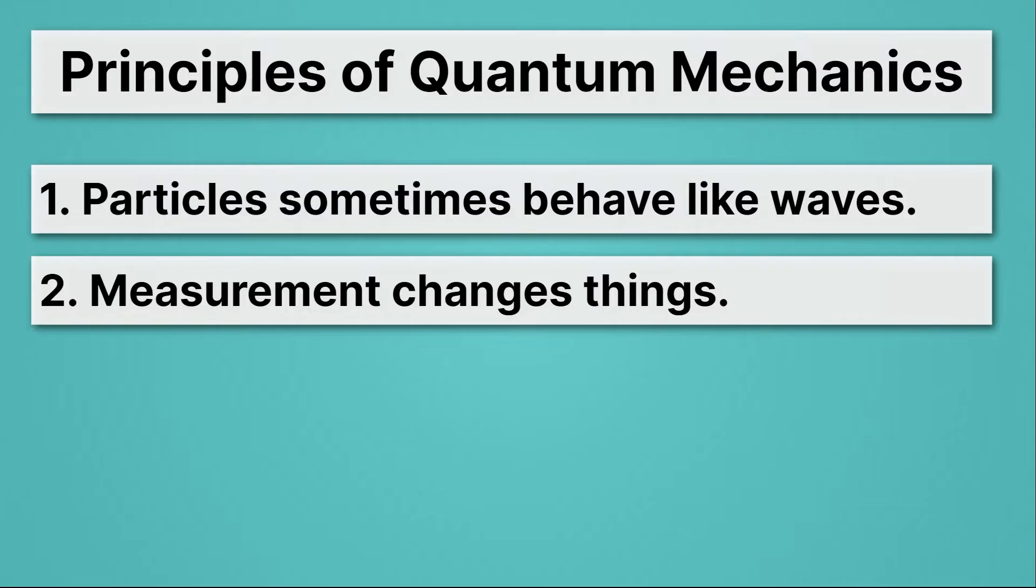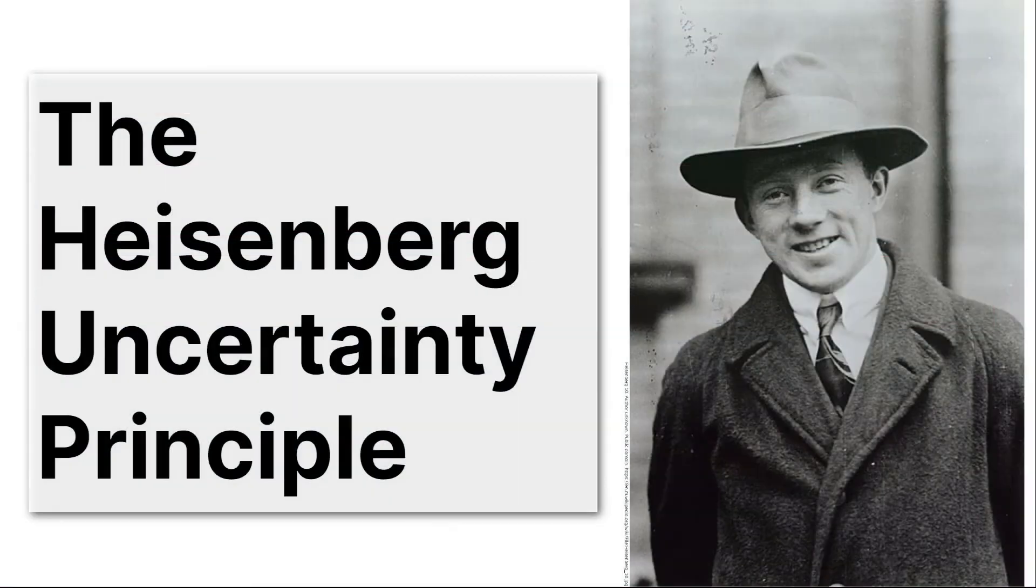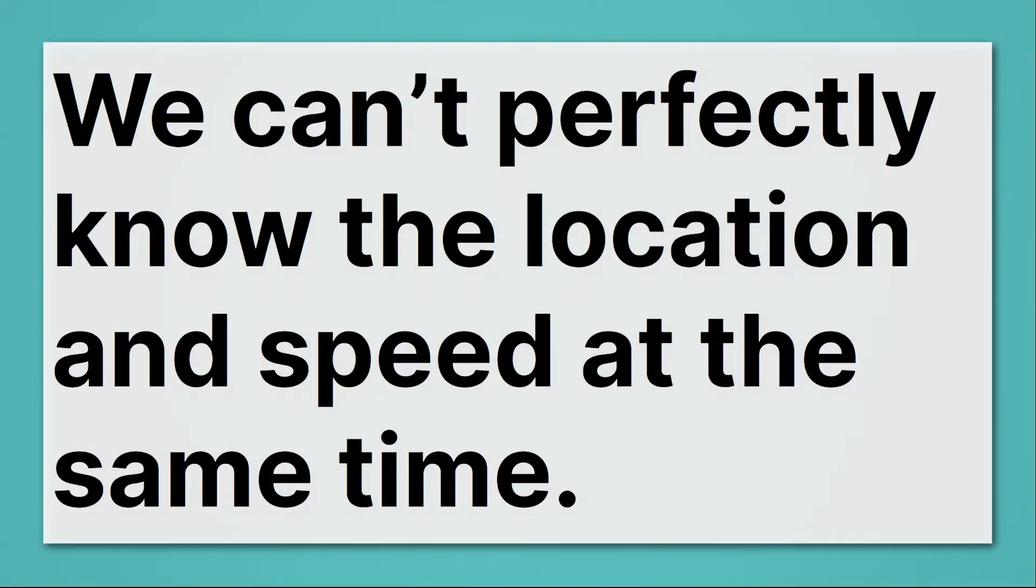But measurement has some more interesting properties in the quantum world. For example, the Heisenberg uncertainty principle, named after Werner Heisenberg, says that we can't perfectly know the location and speed at the same time. What does that mean?